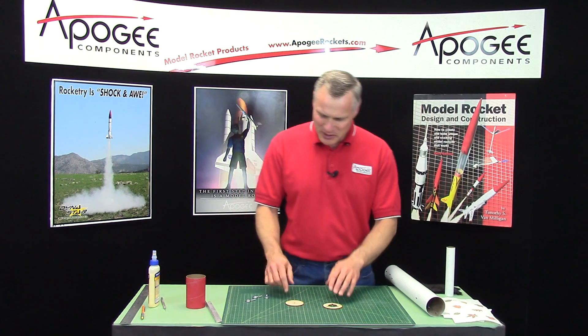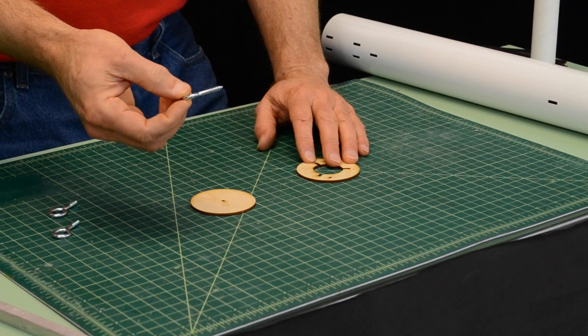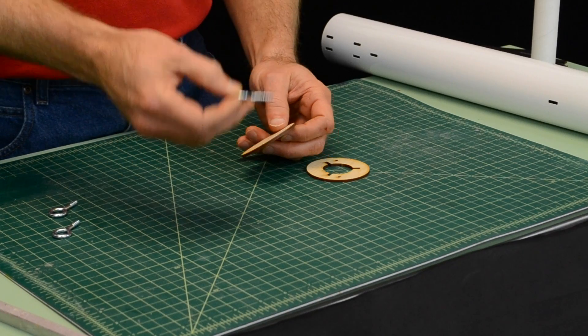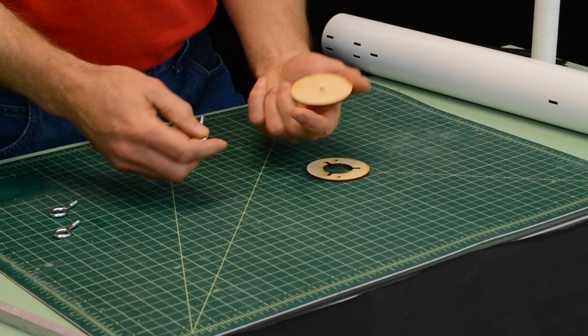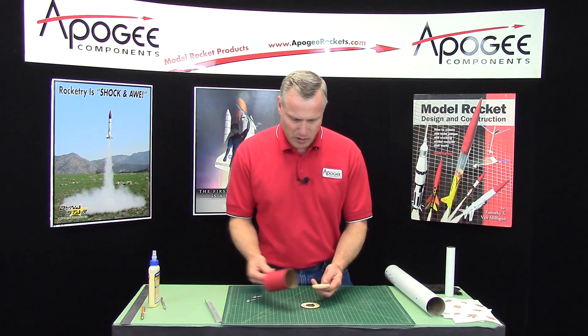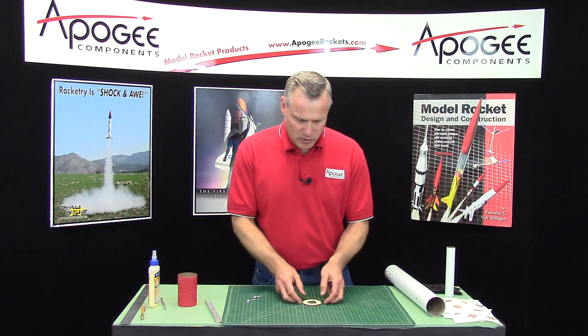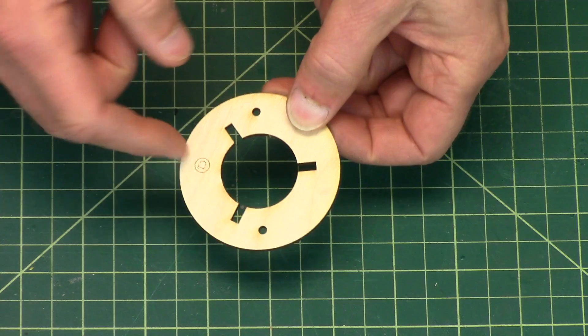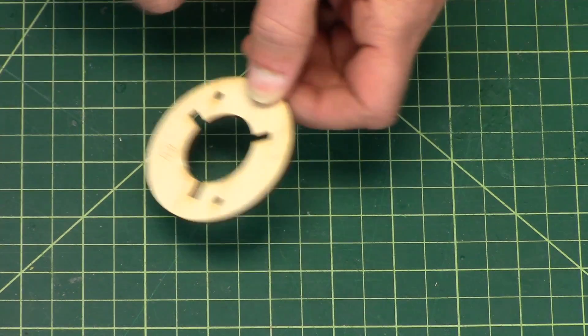Our next step is to put in the screw eyes for the recovery system. You'll have two discs. This one goes into the coupler, and this is one of the engine mount centering rings, and you'll see the two small holes here on the side.